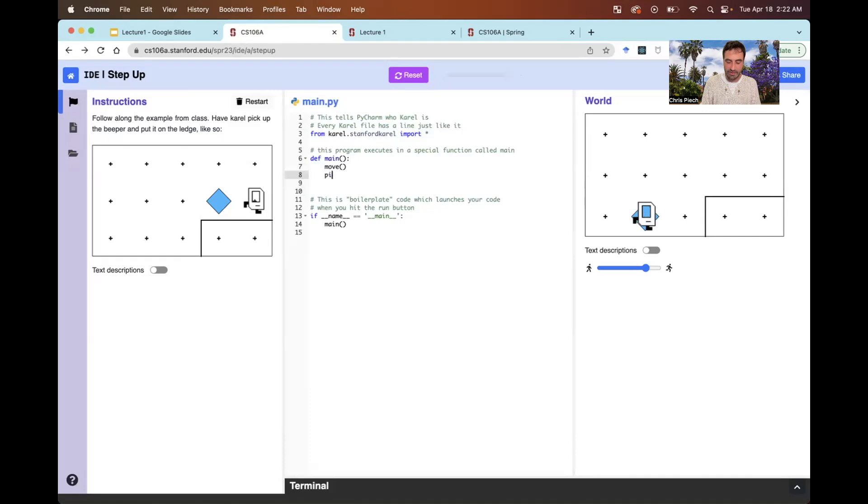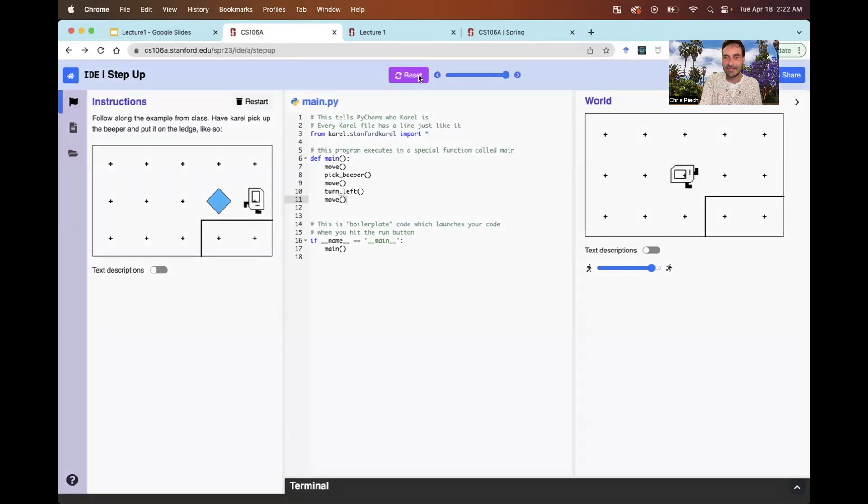So instead of just moving, we want to move, then pick up that beeper, move again. And then we want to turn left and move again. I love to test as I go. So let's test this. Let's make Carol go a little faster. Not that fast. And there it goes, Carol, and gets to this point. This is looking really good. Now we're at that interesting place where we want to turn right.